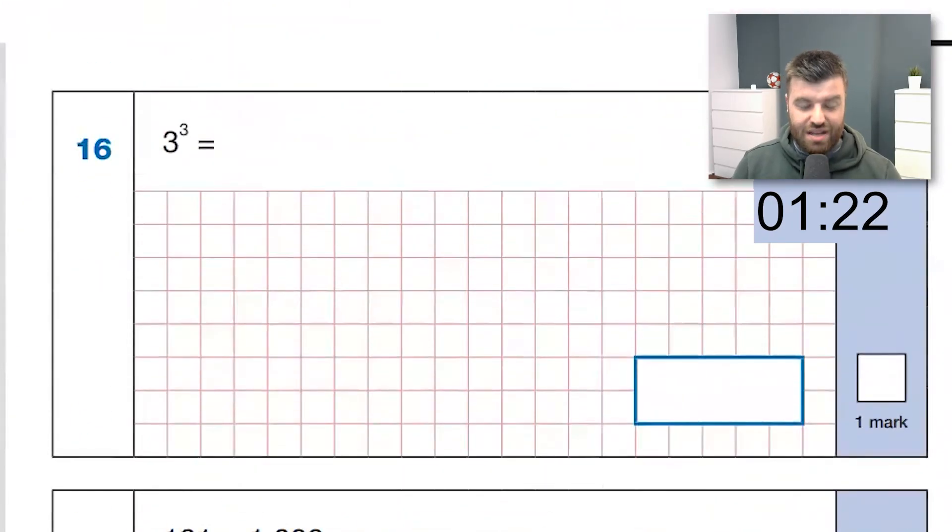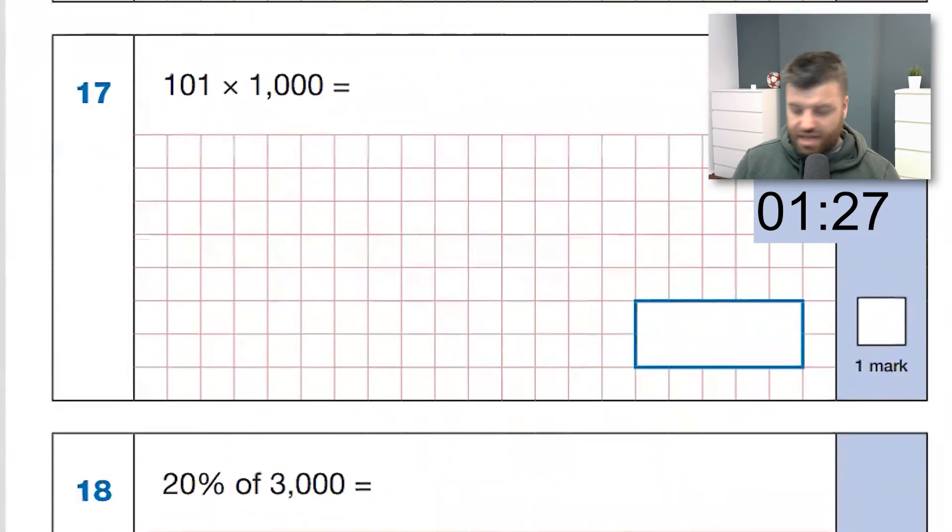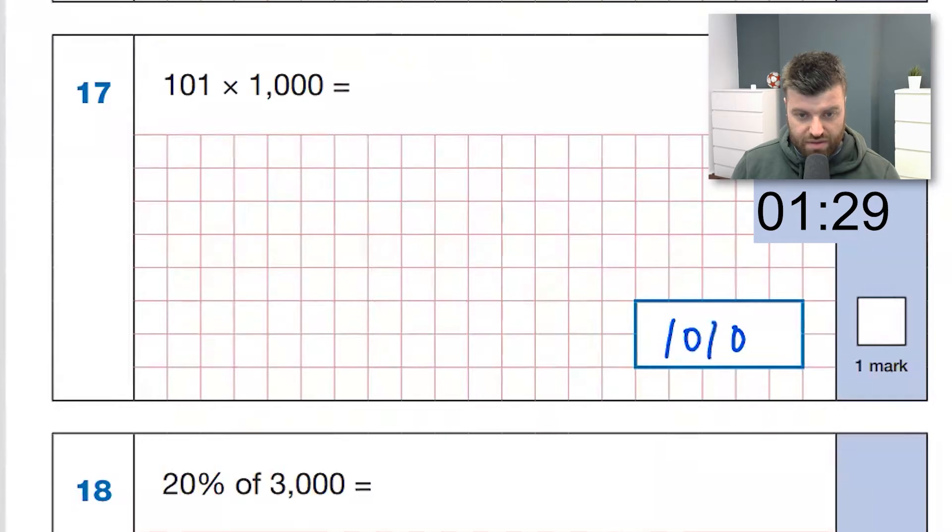Question 16, three cubed. Three times three is nine, times three is 27. 101 times 1,000. Easy. That's just 101,000.